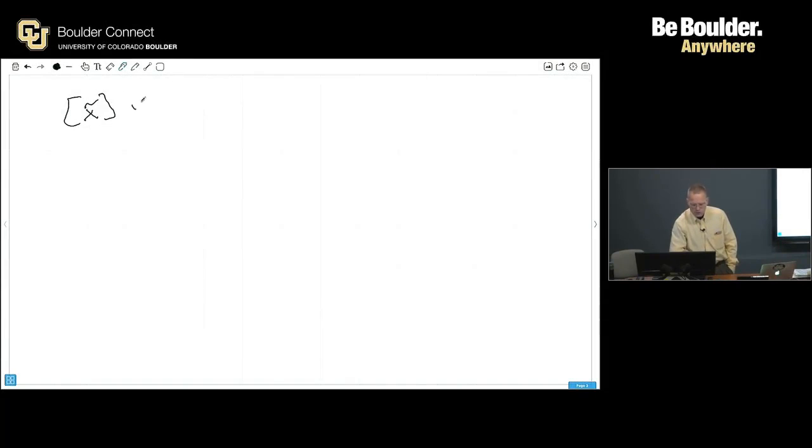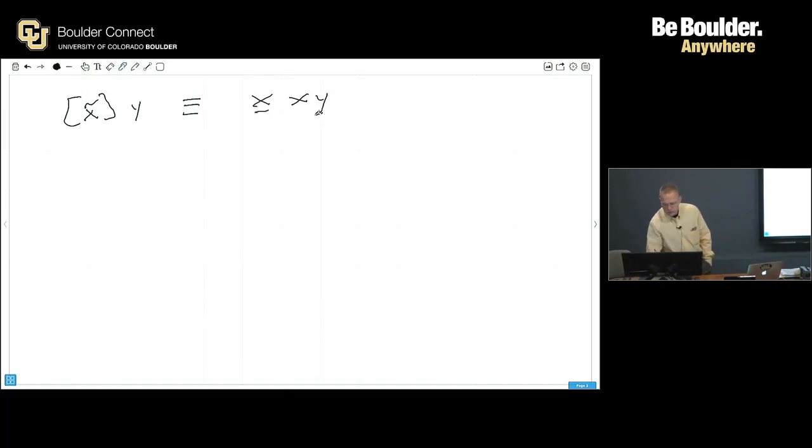So if you have x tilde y, we said this was equivalent to the vector x crossed with the vector y, right? So it allows us, because this is vector math, and over here we end up doing essentially matrix math.